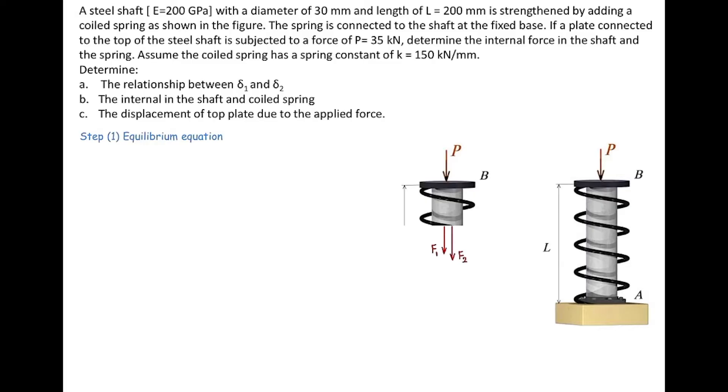Note that these forces should be outward from the surface. Sum of these forces should be equal to zero. So we have sum of the forces in the vertical direction is equal to zero. F1 plus F2 plus P is equal to zero.